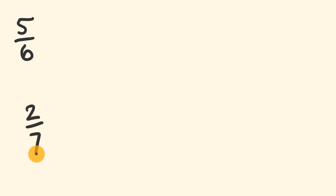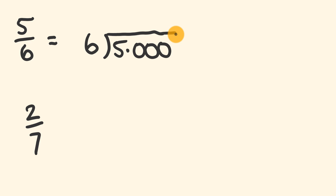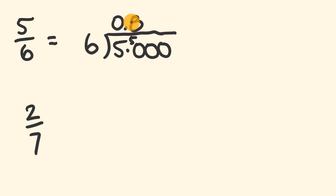Let's go through and do these now. So we have 5 over 6. We set this up as follows: we put the 6 out here and we put the 5 just here, and we put a few zeros there to work with. How many times does 6 go into 5? We know that's going to be 0, so we put a 0 and a decimal place and carry that 5 across. 6 goes into 50 eight times — 8 times 6 is 48 — so we have 2 left over.